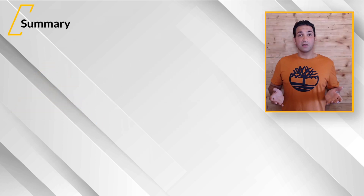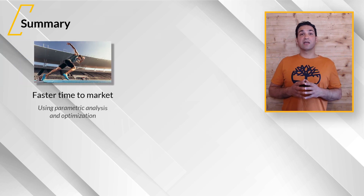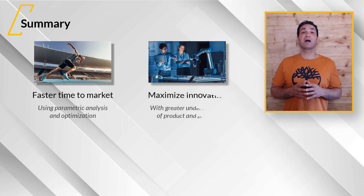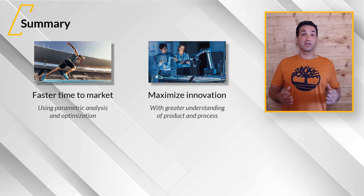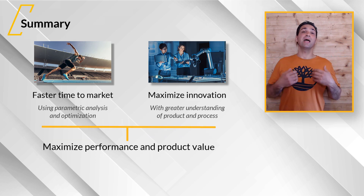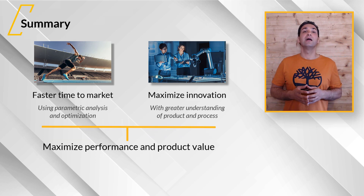To sum this up, parametric analysis and optimization allow for shortening the time to market. By automating processes, we maximize engineering innovation with a greater understanding of the product and production process. Based on this, we can maximize the performance and value of the product. Instead of merely verifying a new product design with simulation, we move to actual simulation-driven product development.